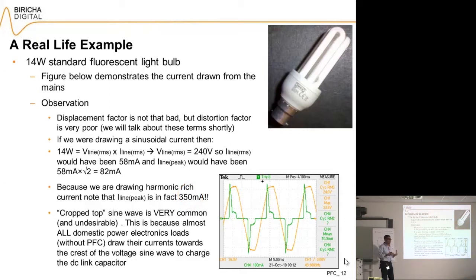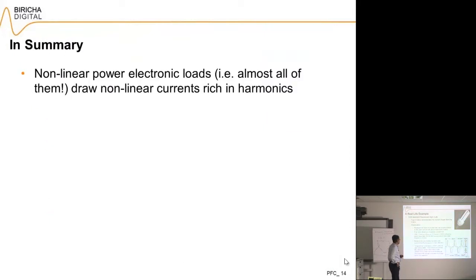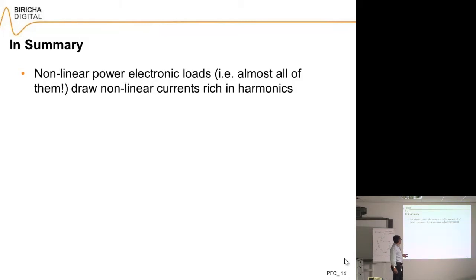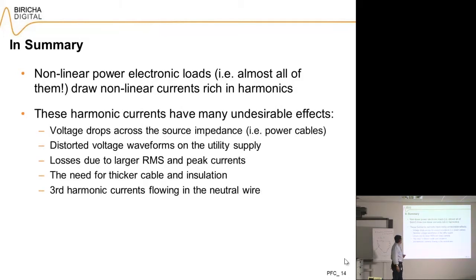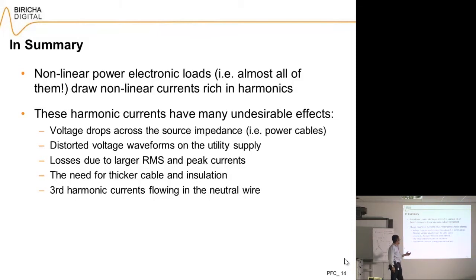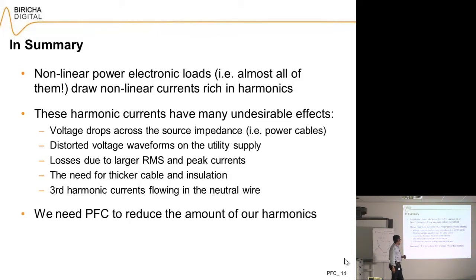To summarize: nonlinear loads — in particular switch-mode power supplies — draw non-sinusoidal currents rich in harmonics. These harmonics force voltage drops across source impedance, distorting the voltage waveform, causing losses due to larger RMS and peak currents, requiring thicker cables, and allowing third harmonic to flow down the neutral wire. That is why regulations mandate reducing these harmonics, and that is why we need power factor correction.